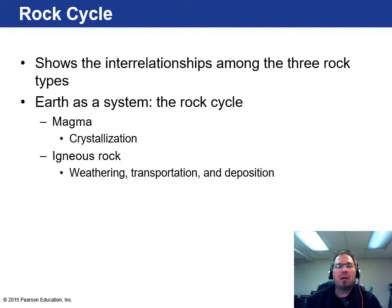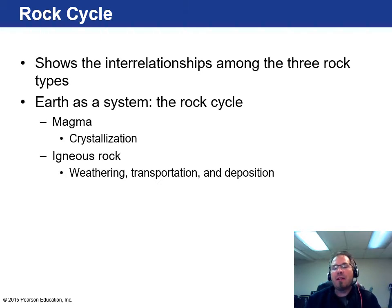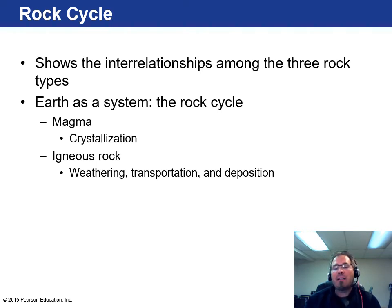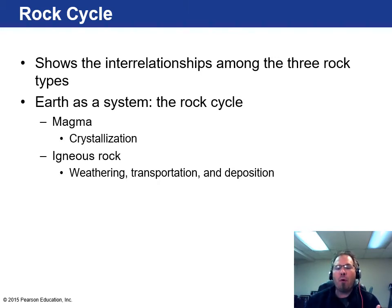The rock cycle is a way of looking at the interrelationships among the three rock types. The Earth as a whole system has this cycle — a birth-to-death kind of thing — where you have the initial birthing stages in the form of magma, the rock crystallizes to get igneous rock, and then over time you have weathering where it's exposed to air, wind, or rain and transported via plate tectonics, ultimately getting deposited somewhere else. This rock cycle explains where all the different rock forms come into place.